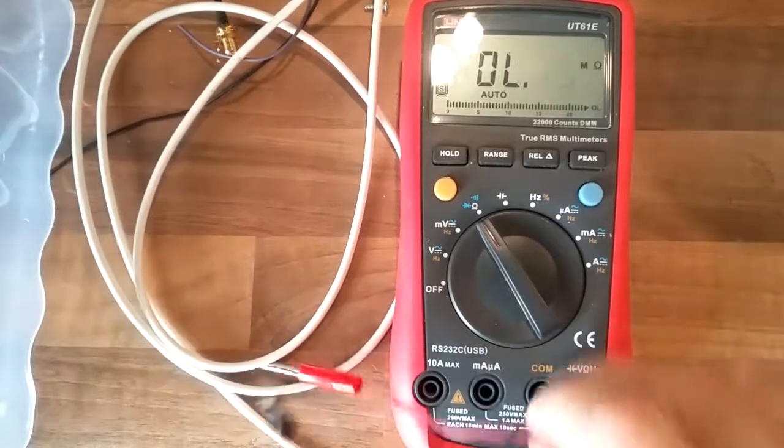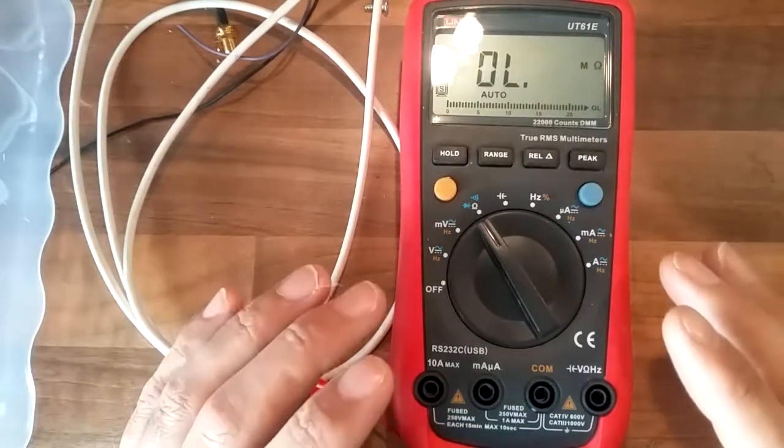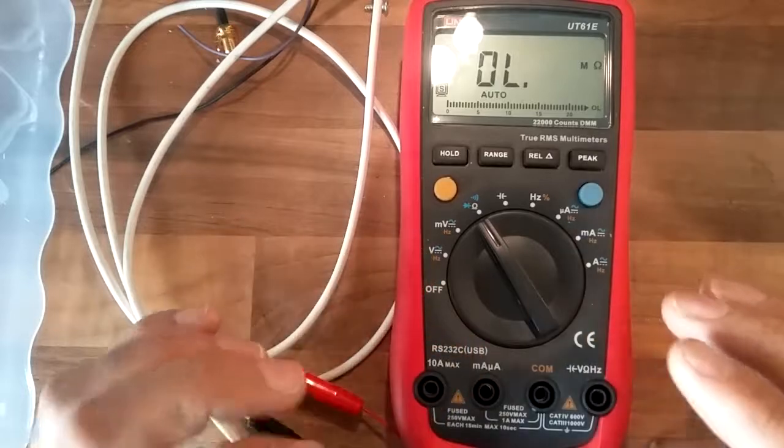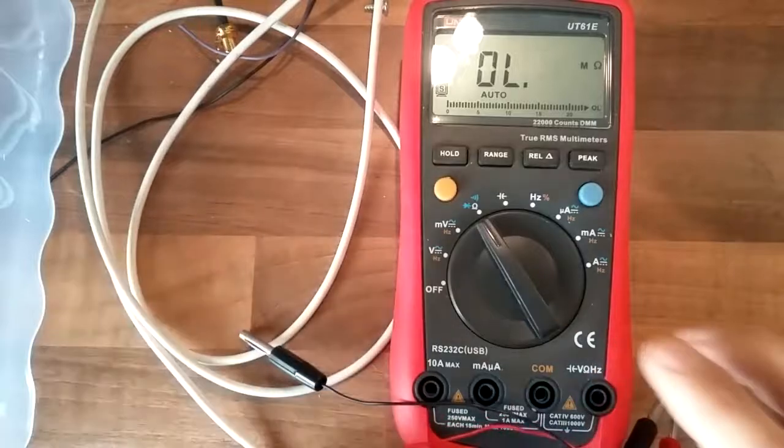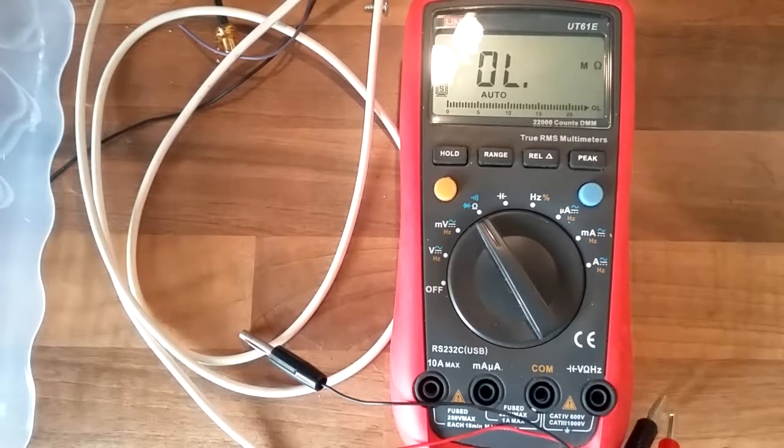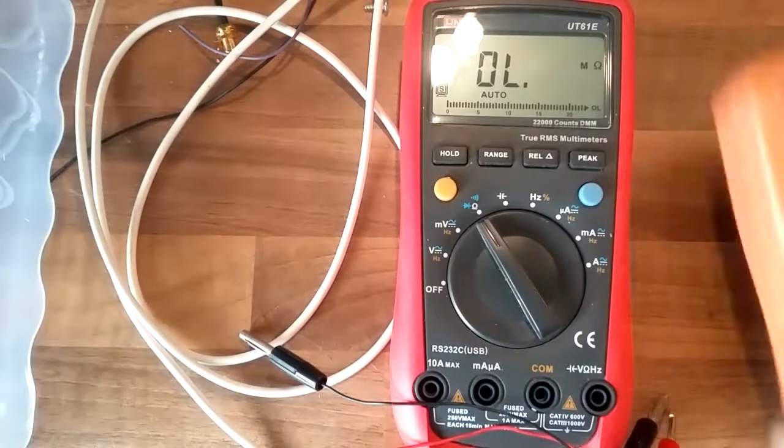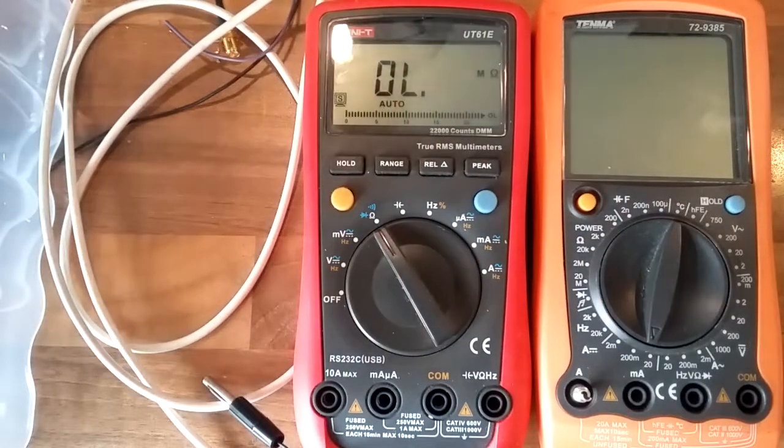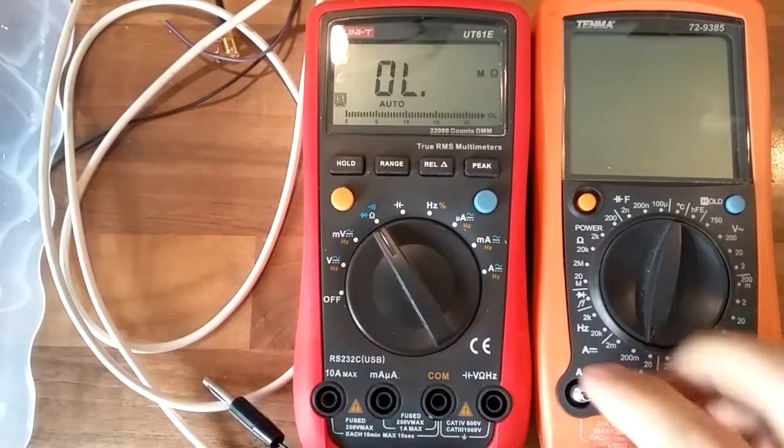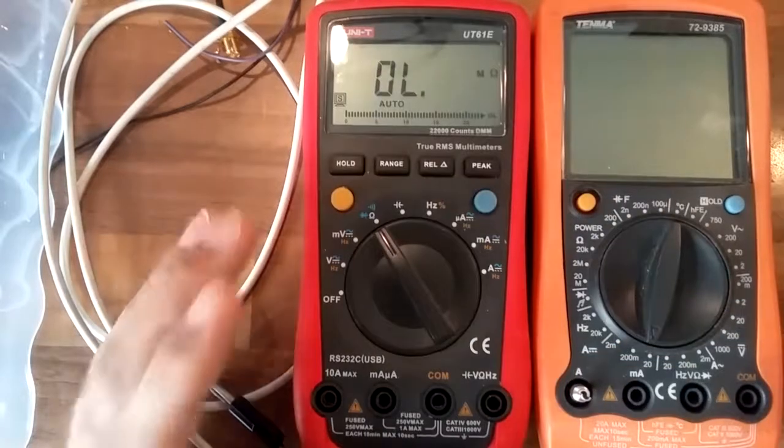Precision multimeters do what is called a four-wire measurement, and that's where these two wires are coming into play as well. Now I don't have a precision multimeter, but no matter—I have a second multimeter.